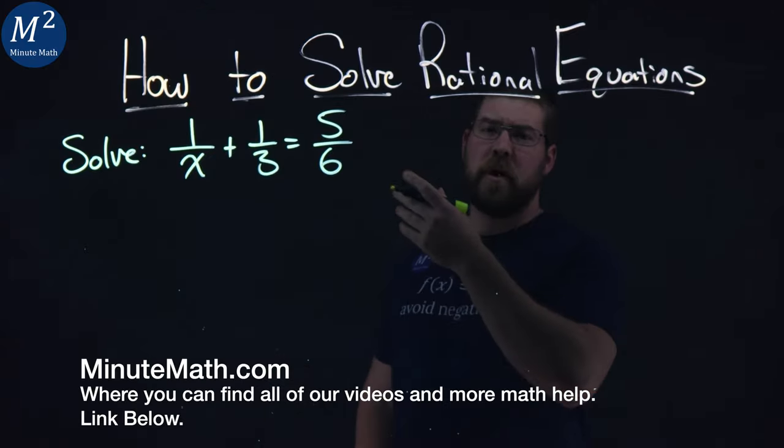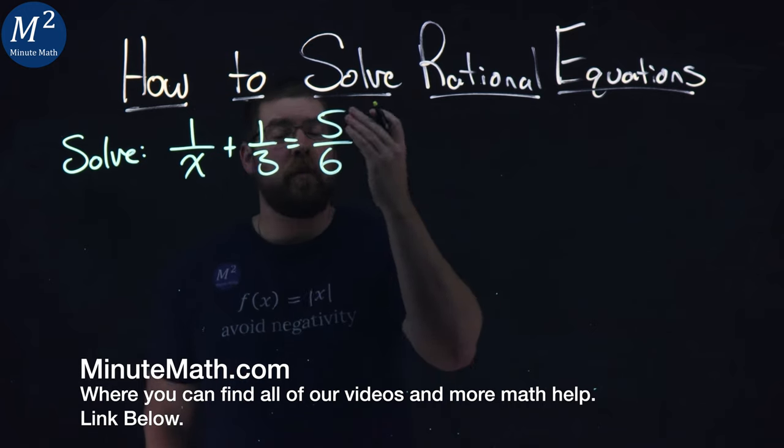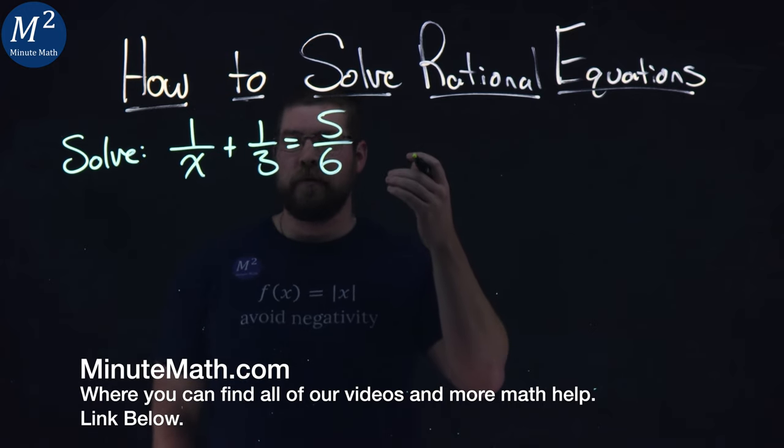We're given this problem here: solve 1 over x plus 1 over 3 equals 5 over 6.